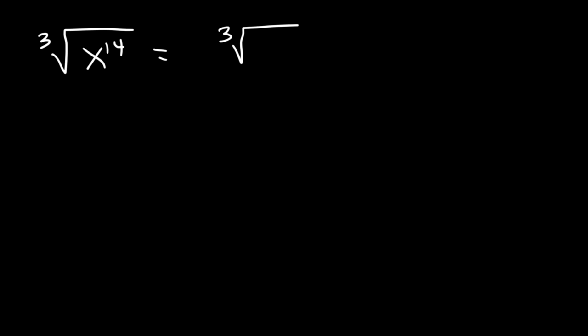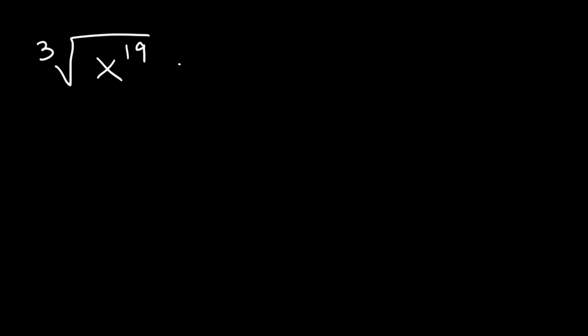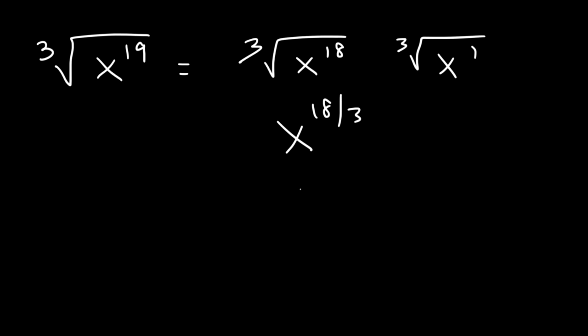Try this one: the cube root of x to the 14. Write it as the cube root of x to the 12 times the cube root of x squared — since 12 plus 2 is 14. 12 divided by 3 is 4, so the answer is x to the fourth times the cube root of x squared. For the cube root of x to the 19th: use 18 and 1, since 18 is the highest multiple of 3 just under 19. 18 divided by 3 is 6, giving x to the sixth times the cube root of x. (3 goes into 19 six times with 1 remaining.)